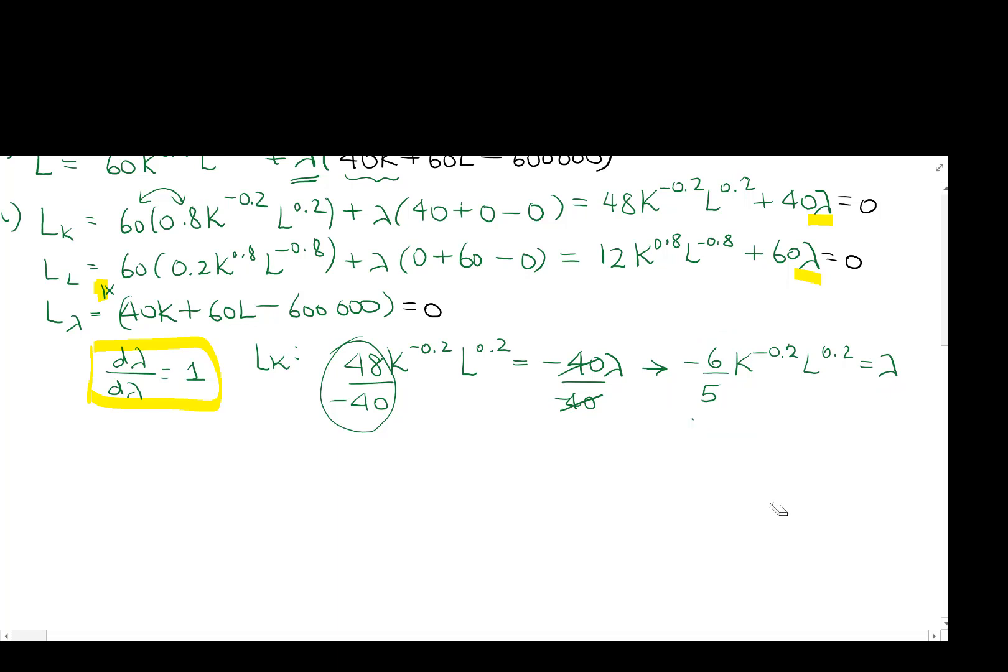And then moving on here using the LL, we have 12K to the 0.8L to the negative 0.8 equals to negative 60 lambda, so divide both sides by 60. And then we have K to the 0.8L to the negative 0.8 divided by, so make that negative, 12 over 60 gives us negative 1 fifth, so divide by 5, and that is equal to lambda.